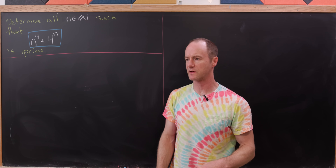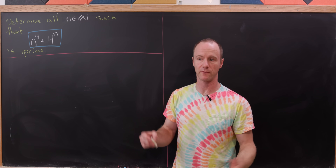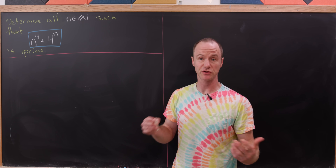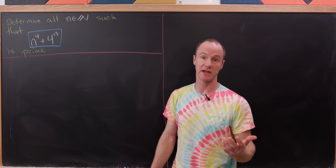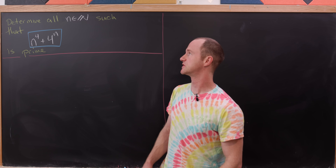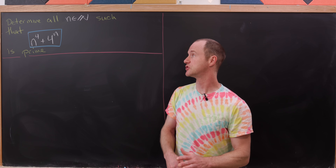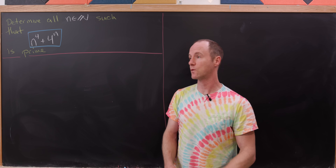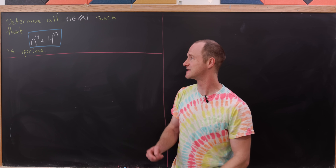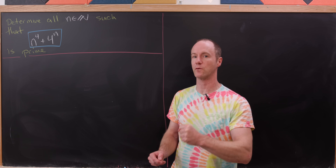I'm currently teaching a number theory class and the other day I did an example before we got going in class, and it was cool enough that I thought I'd show it here as well. Our goal is to determine all natural numbers n so that n to the fourth plus four to the n is prime. There's some nice symmetry about this picture: n to the fourth plus four to the n.